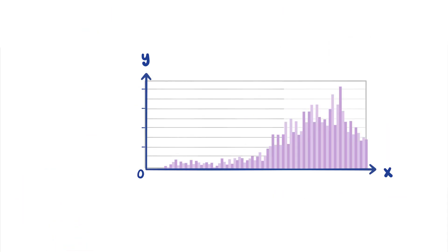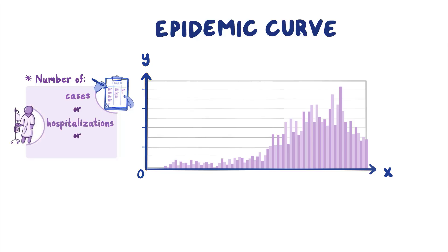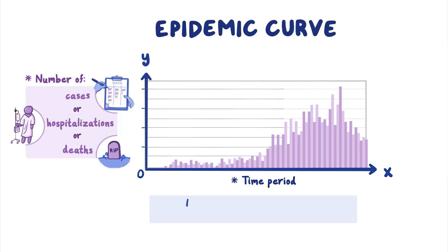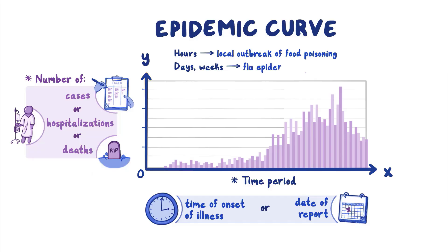Let's look more closely at the two axes of an epidemic curve. The y-axis represents the number of new cases of the disease—usually the number reported to or identified by the health department. For some epi curves, the y-axis represents hospitalizations or deaths due to a disease, depending on what health experts want to show. The x-axis represents the time period during which new cases occurred. Traditionally, cases are categorized by date or time when symptoms began, called time of onset of illness. Cases may also be categorized by date of report. Depending on the disease and situation, the categories on the x-axis can be hours, such as for a local food poisoning outbreak, or days, weeks, or longer, such as for a flu epidemic or pandemic.